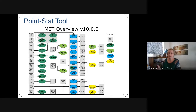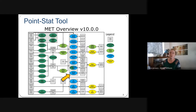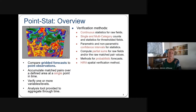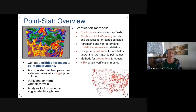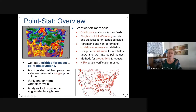The PointStat tool is in the blue stack in our typical data flow diagram, showing all the different tools and how data progresses from left to right. PointStat is in the statistics tools stack. We've already talked about preprocessing tools like PB2NC or ASCII2NC to put data into the right format so that PointStat can read observational fields.